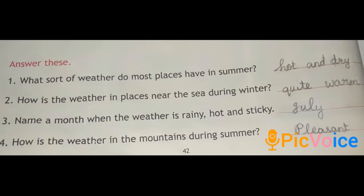Answer these. First one — what sort of weather do most places have in summer? It is hot and dry. Second one — how is the weather in places near the sea during winter? Yes, it is quite warm. Third one — name a month when the weather is rainy, hot and sticky. The rainy season starts in June or July and continues up to September, so you can write July. Fourth one — how is the weather in the mountains during summer season? In hill areas the weather is pleasant in summer season.